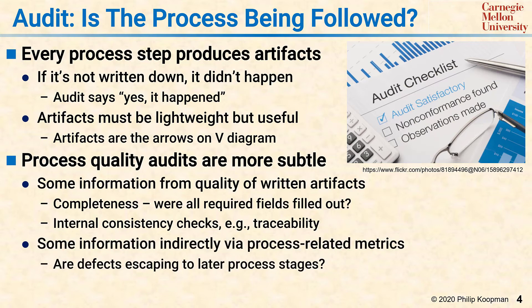Some information can be indirectly obtained via process-related metrics. A classic one is: are defects escaping to a later process stage? If bugs are escaping to system tests that should have been found in unit test or peer review, then you have some knowledge that there are process quality issues back in the unit test or peer review stages. SQA typically keeps those metrics and asks those kinds of questions.